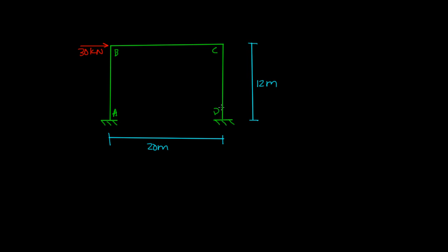Welcome to the third example for the slope deflection method. Here we actually have a frame with members AB, BC, and CD. Points A and D are both at fixed ends. There's a 30 kN load applied to joint B, and it's going to push the structure towards the right. So the deflected shape is actually going to look something like this.